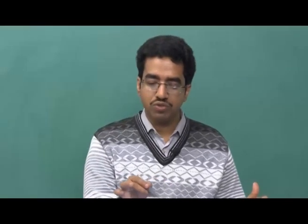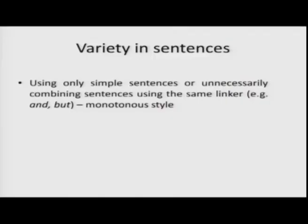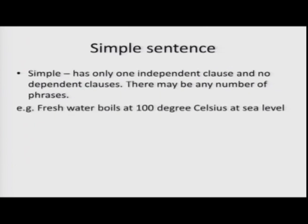As I mentioned, if you use only simple sentences, or if you combine them using linkers like 'and' and 'but' very often, that becomes a monotonous style. So you need to bring in variety. Let us look at each of these kinds of sentences. First, the simple sentence: it is called simple because it has only one independent clause and there are no dependent clauses, but note that there may be any number of phrases.